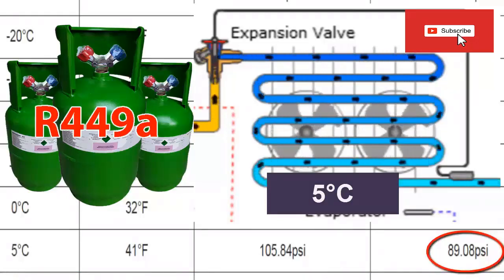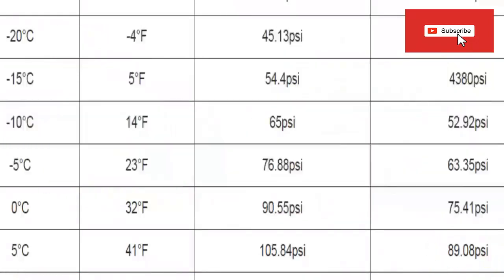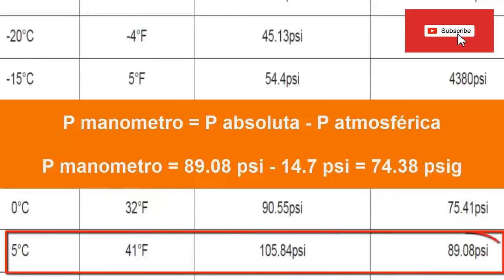As the pressure in the table is given in absolute values, you must subtract the atmospheric pressure of your location from these values. 14.7 psi can be taken as general atmospheric pressure. Thus, 14.7 psi must be subtracted from 89.8 psi to obtain a gauge pressure value of 74.38 psi G.